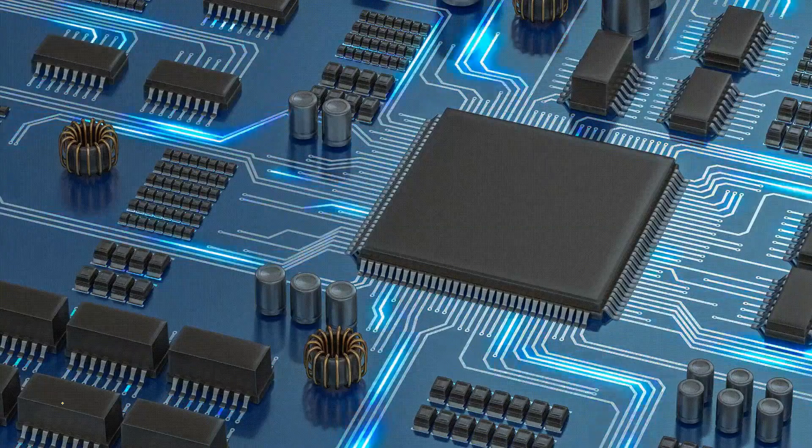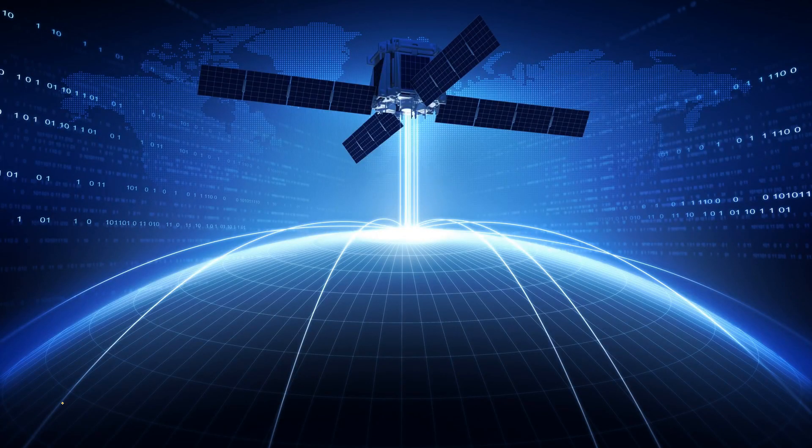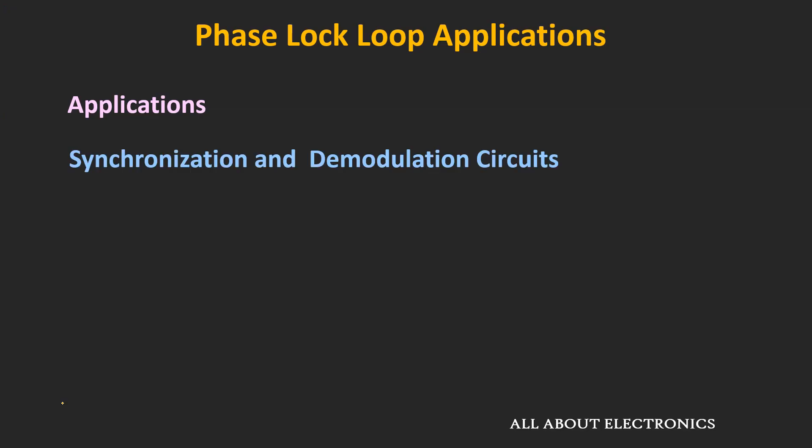Starting from computing to communication, phase locked loops are widely used in many electronics applications. In communication, they are used in synchronization and demodulation circuits — for example, in FM demodulation and in frequency shift keying, they are commonly used.